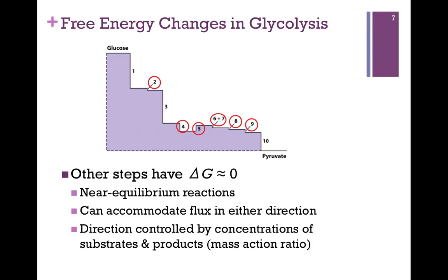The other seven steps have delta G changes close to zero — they are near-equilibrium reactions. That means they can accommodate flux in either direction. These are the steps where we can control the flow by the relative concentrations of substrates and products — remember, that's our mass action ratio.